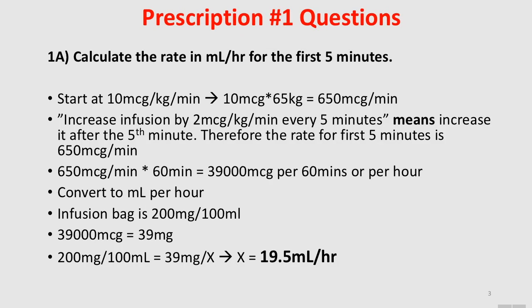Question one: calculate the rate in mL per hour for the first 5 minutes. You start at 10 mcg per kg per minute. Based on the patient's weight of 65 kg, we get 650 mcg per minute. The prescription says increase the infusion by 2 mcg per kg per minute every 5 minutes, so you would increase 1 second after that 5th minute — not exactly at 5 minutes. So for the first 5 minutes, the bag runs at 10 mcg per kg per minute, or 650 mcg per minute.